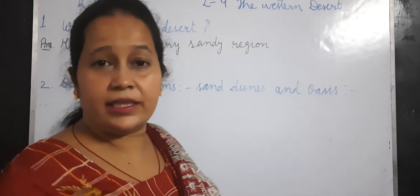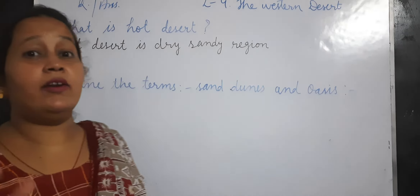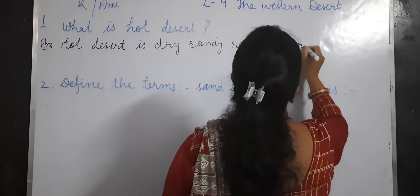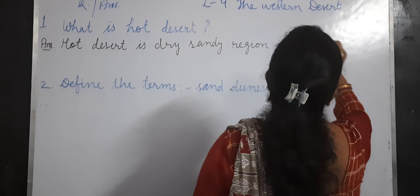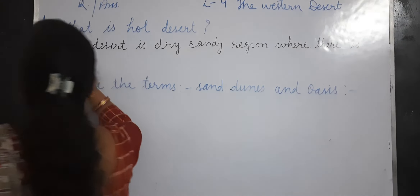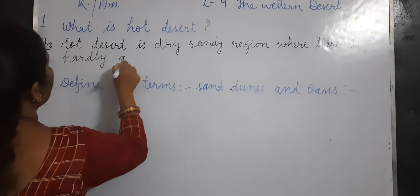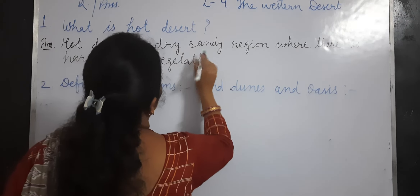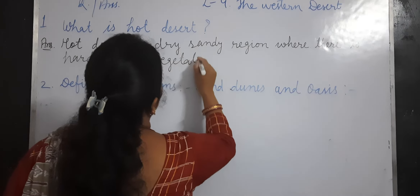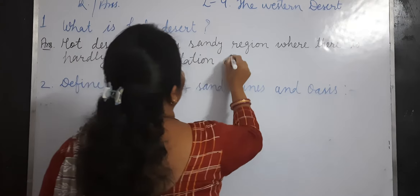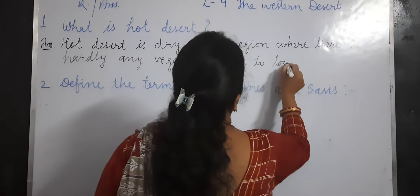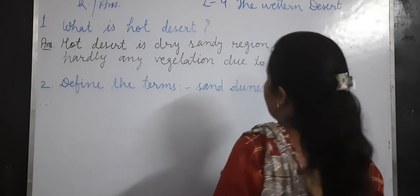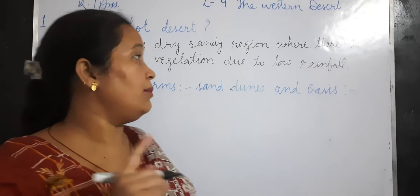Dry sandy means dry and sandy. Dry sandy desert. There is hardly any vegetation, and there is low rainfall due to low rainfall.